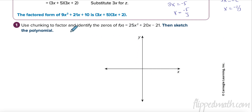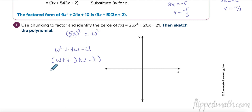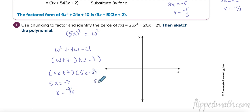Let's try the next one. The perfect square term here is 5x, so I let w = 5x. The expression becomes w² + 4w - 21. Two numbers that multiply to negative 21 and add to 4 are positive 7 and negative 3, giving (w + 7)(w - 3). Plugging w = 5x back in: (5x + 7)(5x - 3). Zeros: 5x = -7 gives x = -7/5; 5x = 3 gives x = 3/5. It's a quadratic with positive a, so it opens upward.